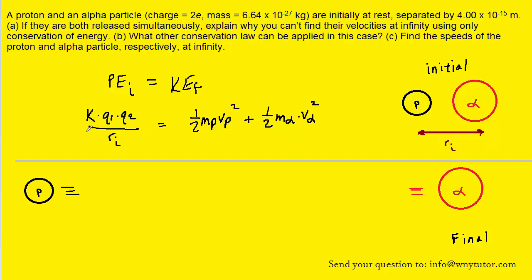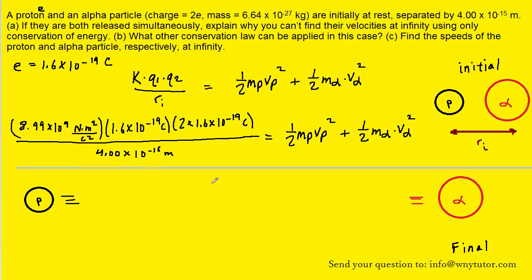We know all the values on the left-hand side of this equation. K is a constant. The charges are given: a proton has a charge of positive e, and the alpha particle has a charge of 2e. The distance between them is given in the question. Note that e equals 1.6 times 10 to the negative 19 coulombs — the standard elementary unit charge. So we'll plug in K, both charges, and the distance.